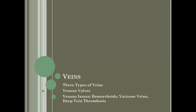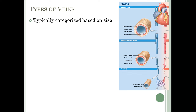Now we'll talk about veins — the three types, the valves found in veins, and some venous issues including hemorrhoids, varicose veins, and deep vein thrombosis. Veins can be categorized into three categories based more on size rather than differences in the amount of muscle versus elastic tissue as with arteries.